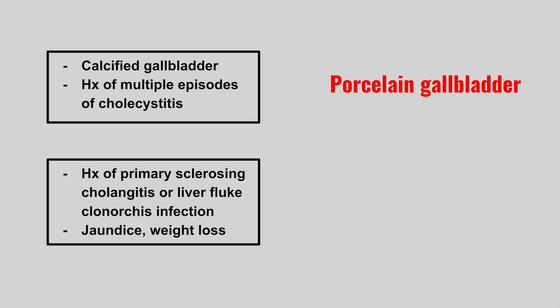The next patient has a history of primary sclerosing cholangitis or a liver fluke like Clonorchis infection, and they develop jaundice and weight loss. This is cholangiocarcinoma.